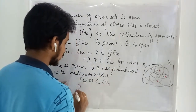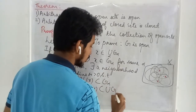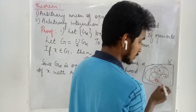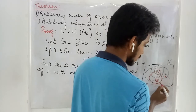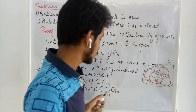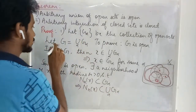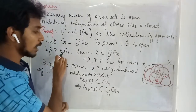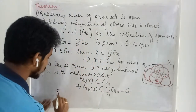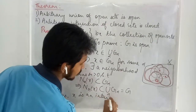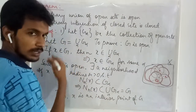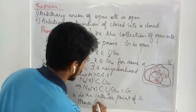If this neighborhood is contained in G_alpha, then we can say this neighborhood is contained in the union of all such sets, because if a set is contained in one of the sets, it is also contained in the union. So, for any element X of G, we are able to identify some neighborhood of X which is contained in this union. Therefore, X is an interior point of G.